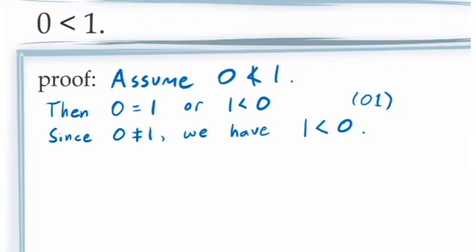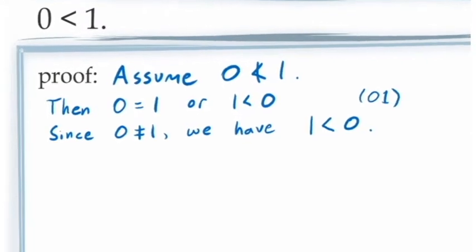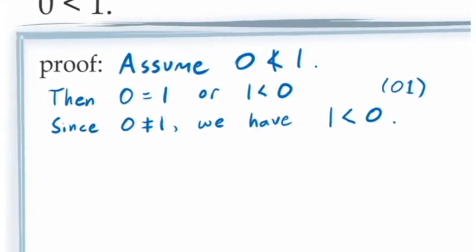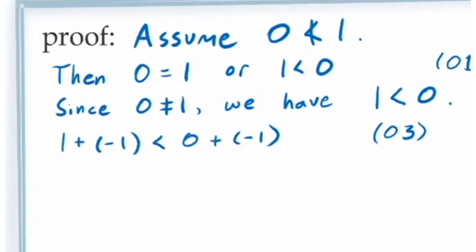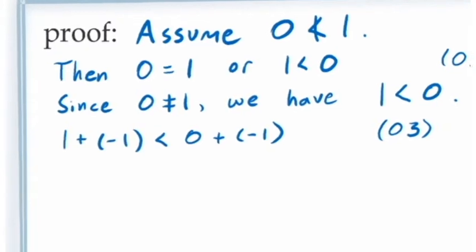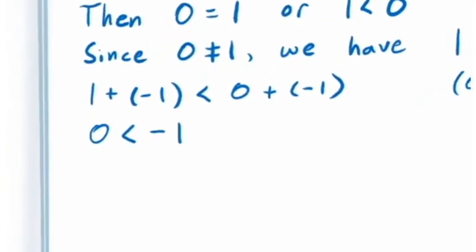One thing we might think to do is bring the 1 over to the other side of the inequality to show, for example, that 0 is less than negative 1. We can do this if we take our inequality and apply the third order axiom by adding negative 1 to both sides. The 1 and the negative 1 will cancel out, and we get 0 is less than negative 1. It might seem weird that a negative number is greater than 0, but it's not a logical contradiction — it's just one of the weird things that would happen in a world where 0 was not less than 1.